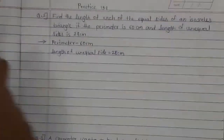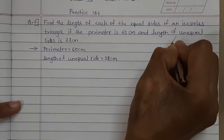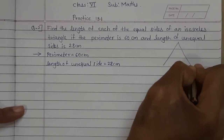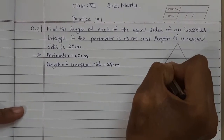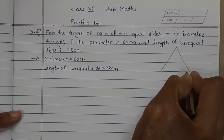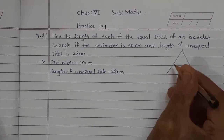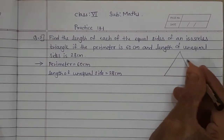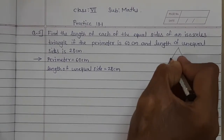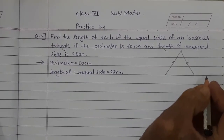Now I will draw an isosceles triangle for your understanding. See, suppose this is an isosceles triangle. Now what is meant by an isosceles triangle? Its two sides are equal. Suppose we take these two sides — these are the equal sides.